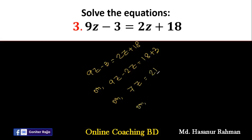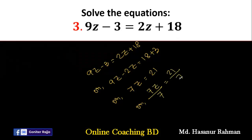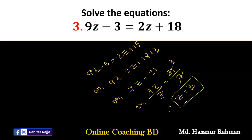Now we have to divide this equation by 7. 21 divided by 7 is 3, and 7 divided by 7 is 1. So the answer will be j equal to 3, and this is our final solution.